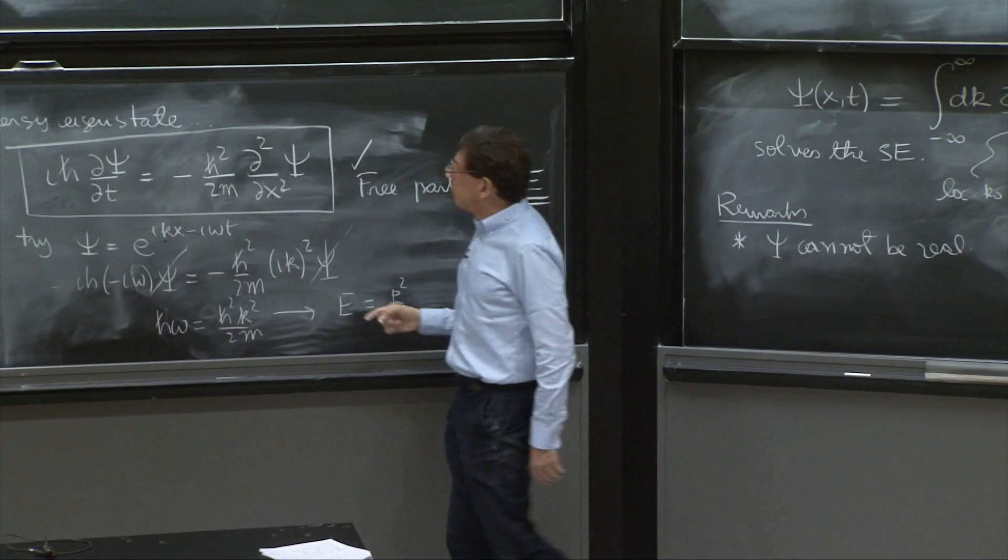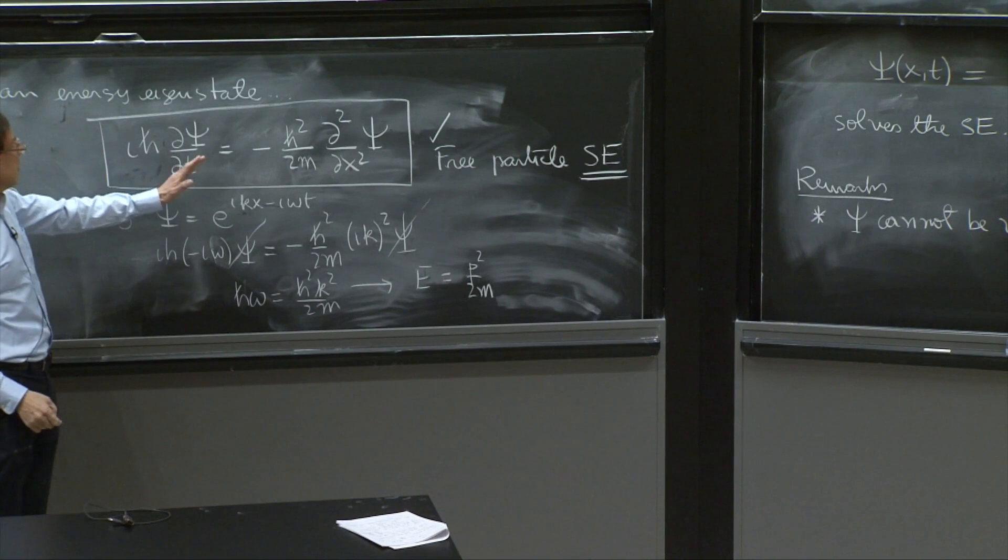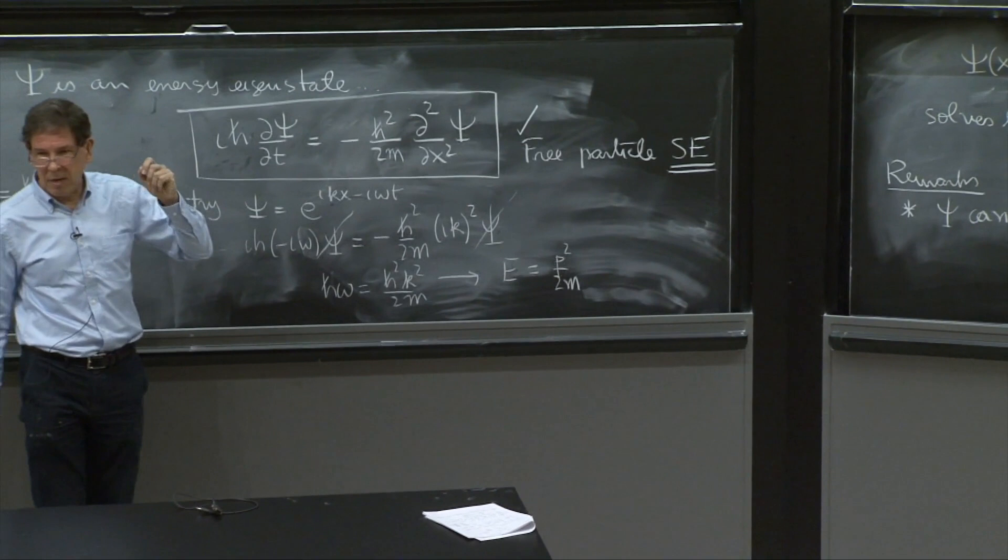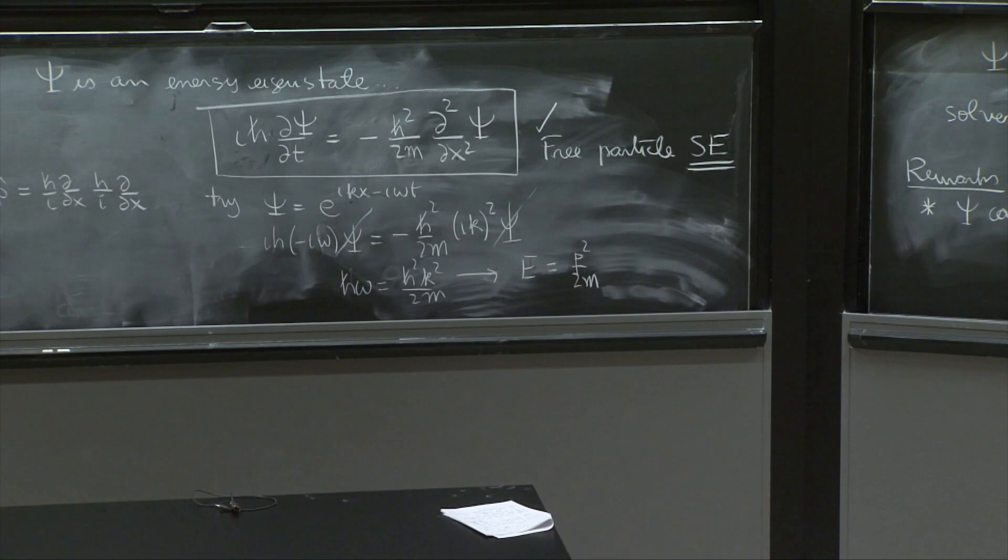the right hand side would be real. This derivative would be real, because the derivative of a real function is a real function, and here you have an imaginary number. So structurally, it is forbidden to have full wave functions that are real.